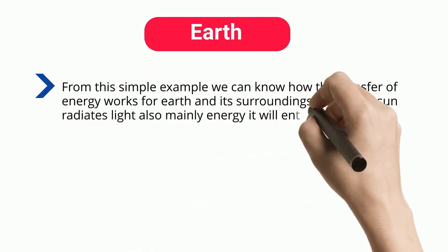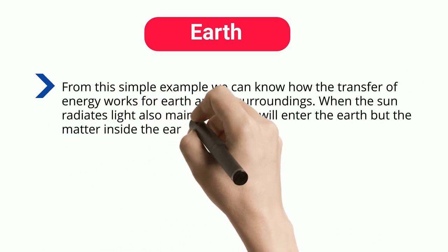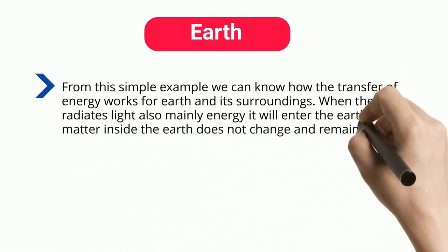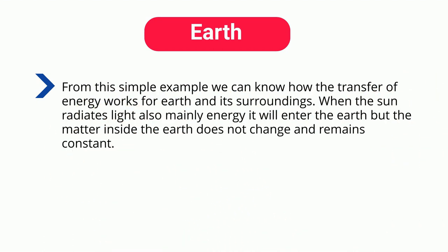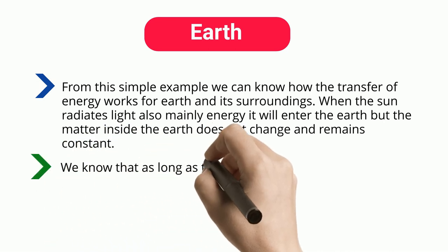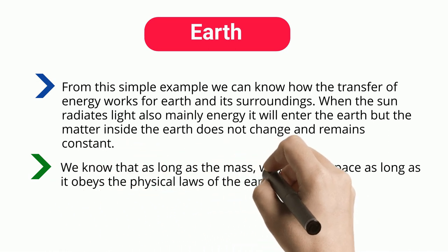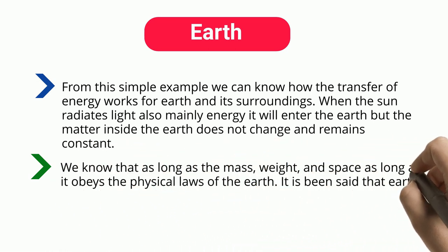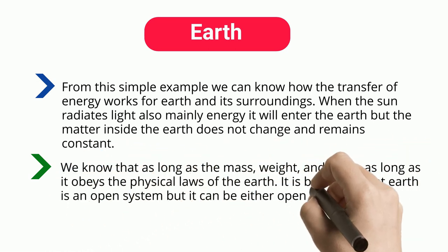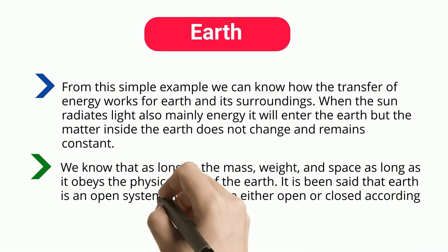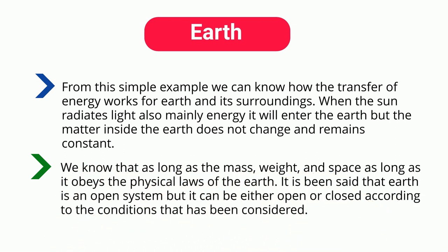When the sun radiates light — mainly energy — it will enter the Earth, but the matter inside the Earth does not change and remains constant. As long as mass, weight, and space obey the physical laws of the Earth, it holds. It has been said that Earth is an open system, but it can be either open or closed according to the conditions considered.